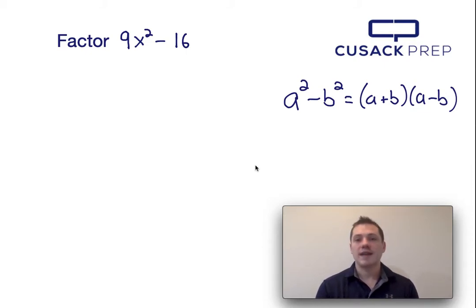Now in order to factor 9x squared minus 16, I first recognize that 9x squared and 16 are both perfect squares. Because they're both perfect squares and they're separated via subtraction, I know that I can use the difference of squares formula in order to factor this.